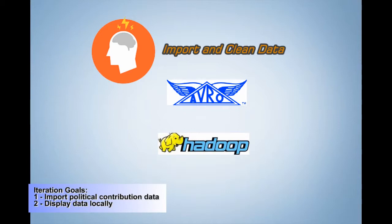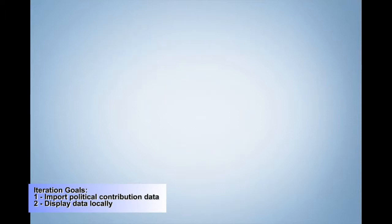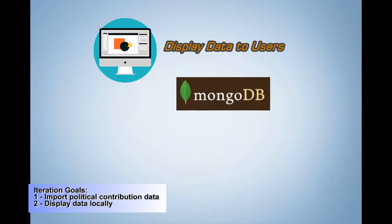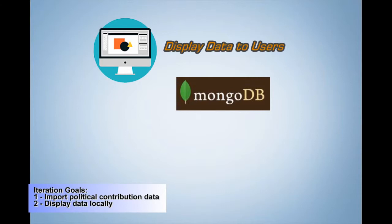This flexibility is very useful as we can change data structure as we learn more about the data with each iteration. We'll store data displayed by the web application in MongoDB. MongoDB is a great database for storing unstructured data. It is similar to Hadoop, but unlike Hadoop, we won't be using MongoDB to clean data — it is merely there to provide data for our web application.